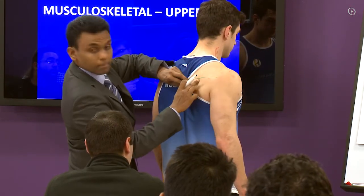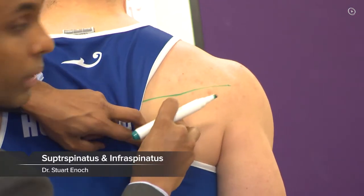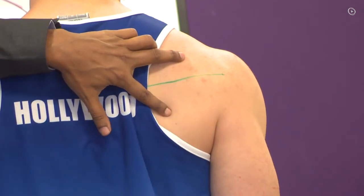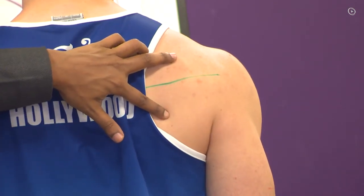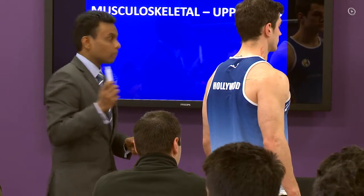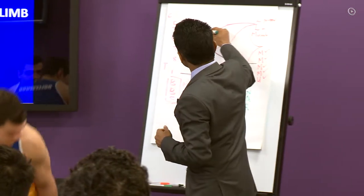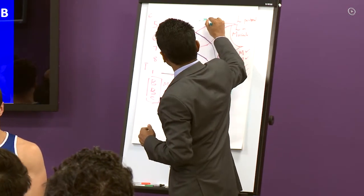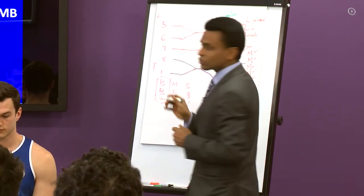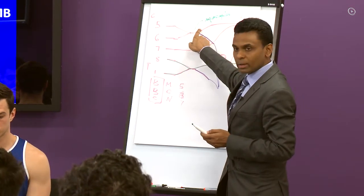That's the spine of the scapula. Supraspinatus, infraspinatus — what supplies those muscles? From the upper trunk you also have something called the suprascapular nerve. The suprascapular nerve supplies the supraspinatus and the infraspinatus.